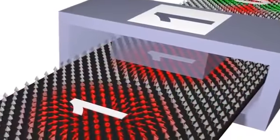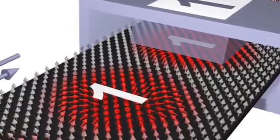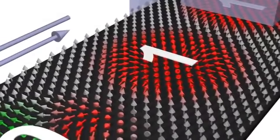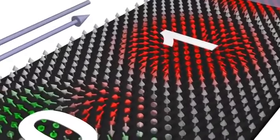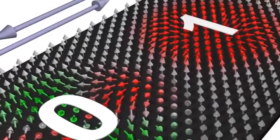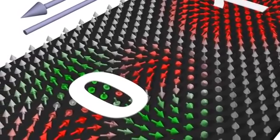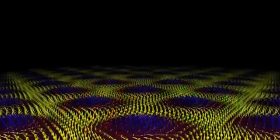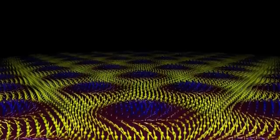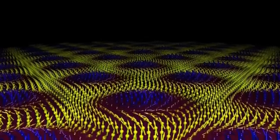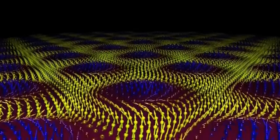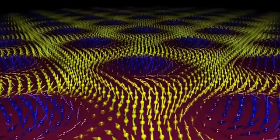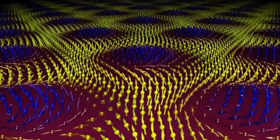Not only can skirmions be used to store data, they can potentially be used for random access memory computation. But the main challenge is finding a practical way to read the data once it's stored. The only way to read the data right now is by X-ray magnetic spectroscopy equipment, which is too complex and expensive. Researchers are currently working on a way to add another layer of metal, in order to detect the difference in the presence of skirmions on the adjacent layer.